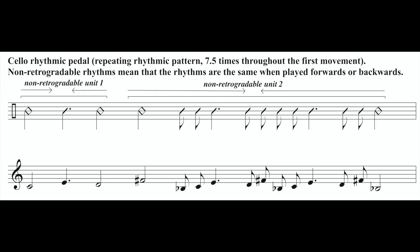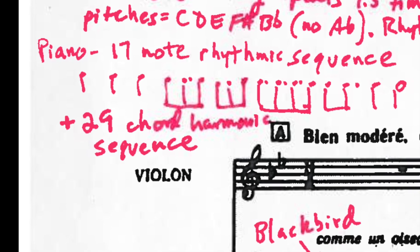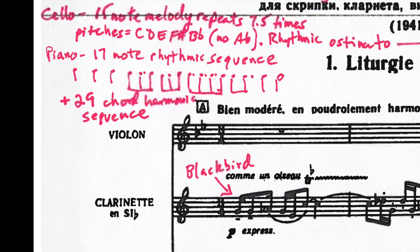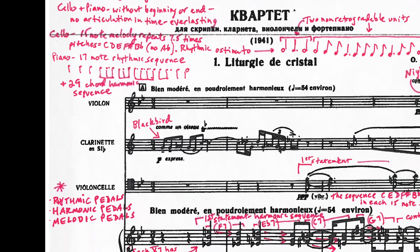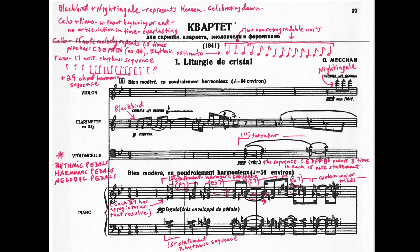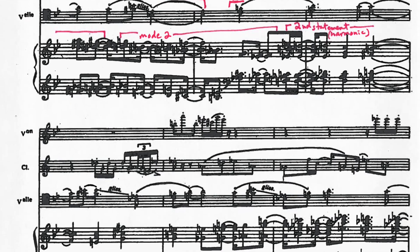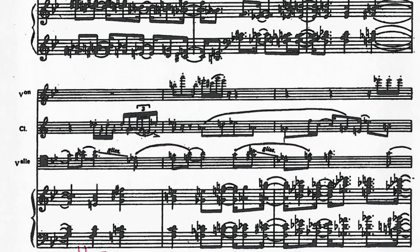The cello is playing this melody seven and a half times, which in itself might give you some ideas of different ways of putting music together. Meanwhile, the piano has its own tricks: the pianist is playing a repeated sequence of 29 chords over and over, and those 29 chords are being played in a rhythmic pattern that consists of 17 rhythmic events. So there's a rhythmic ostinato and a harmonic ostinato happening simultaneously.